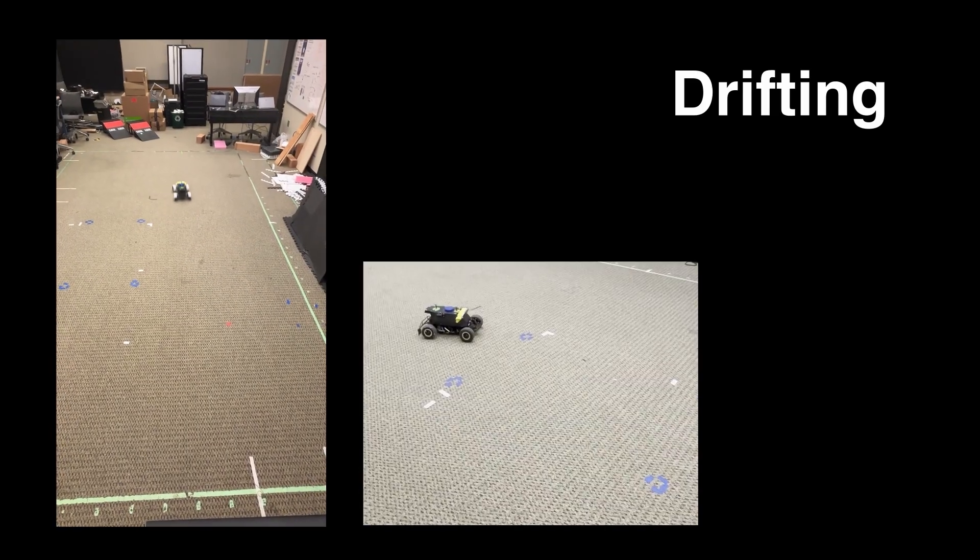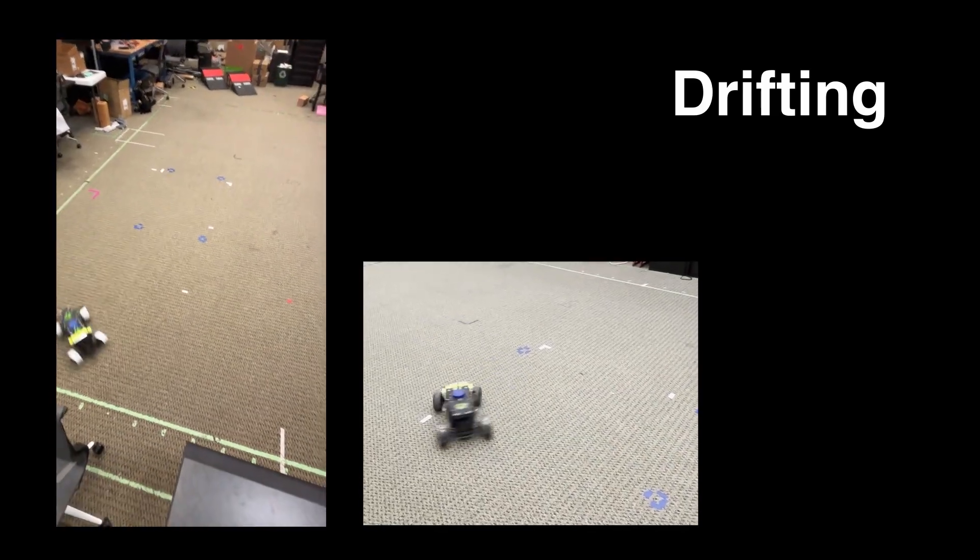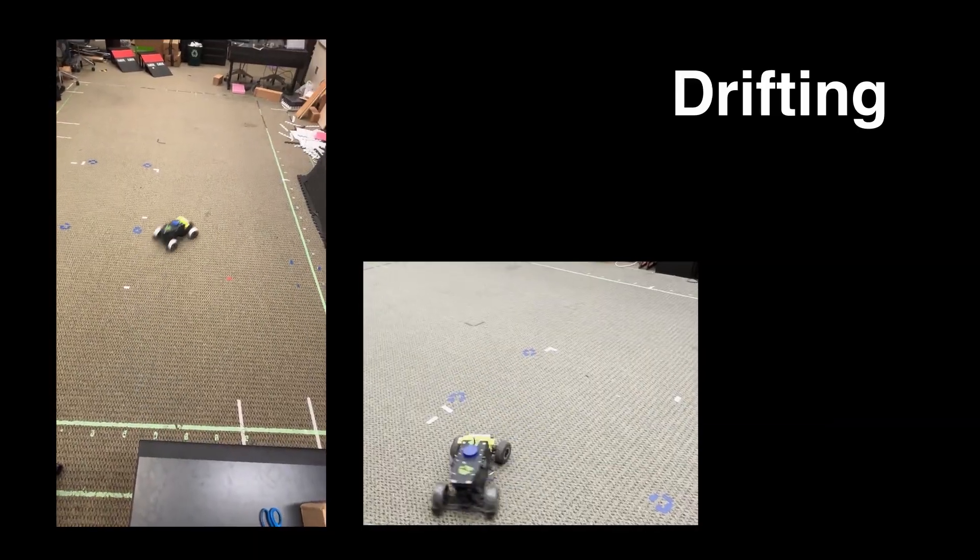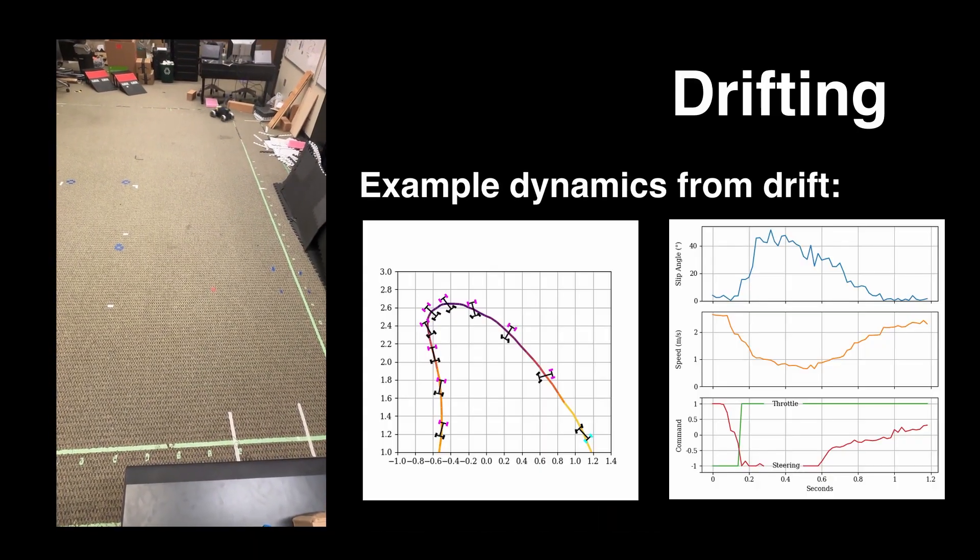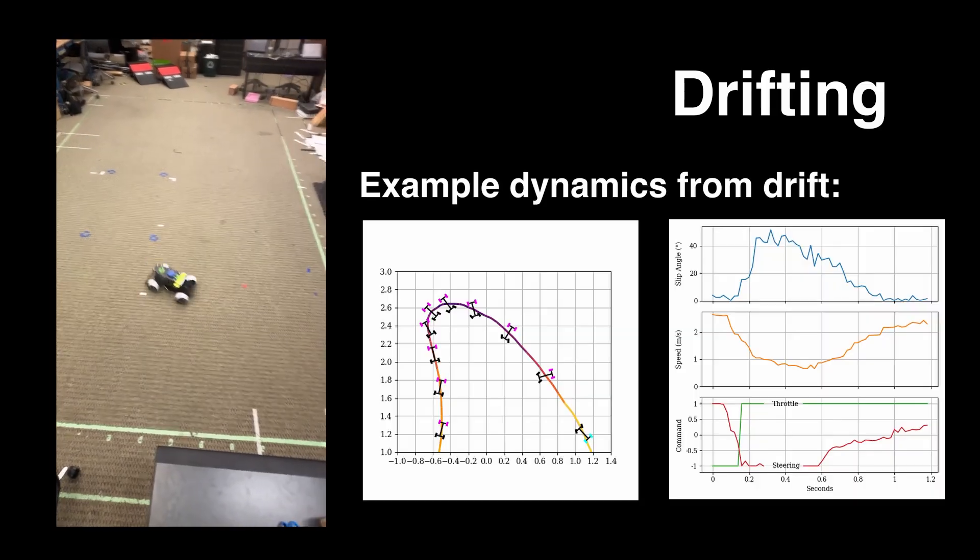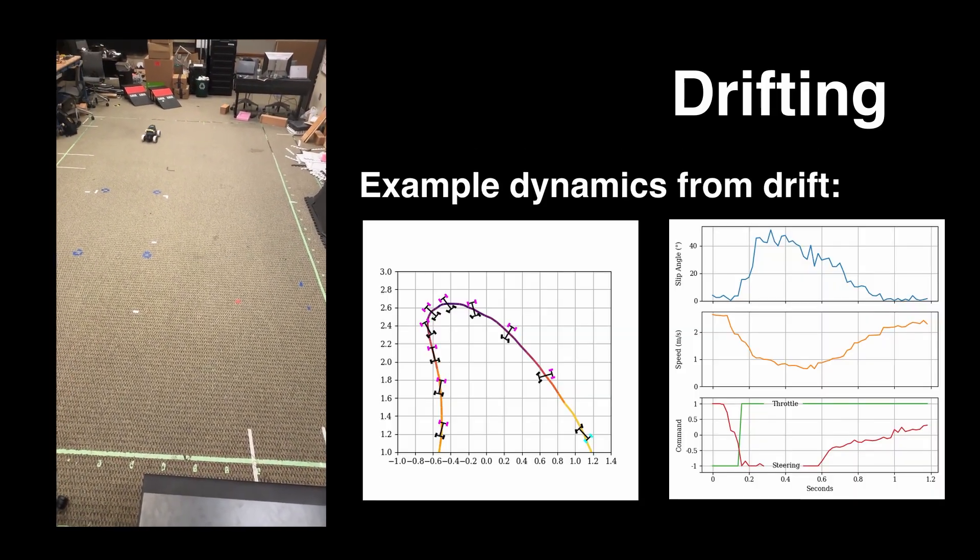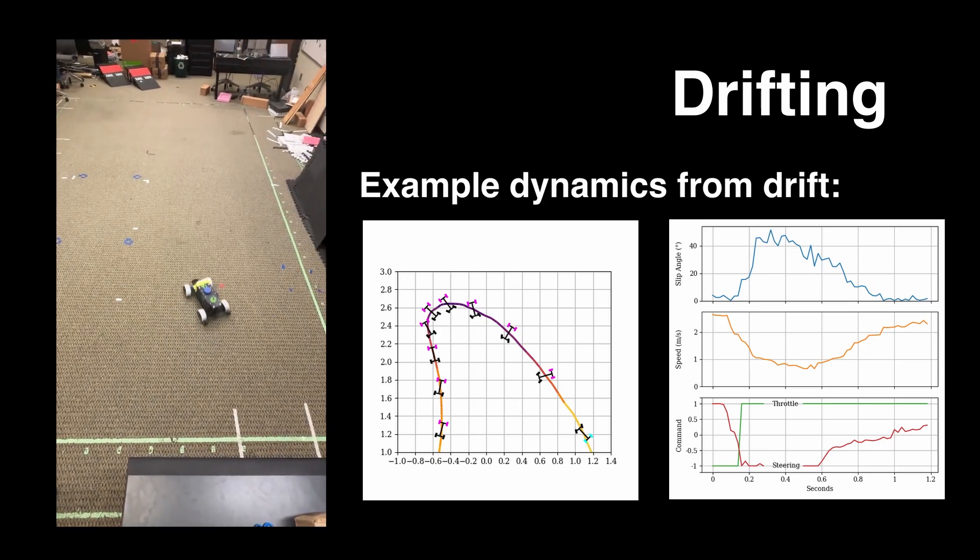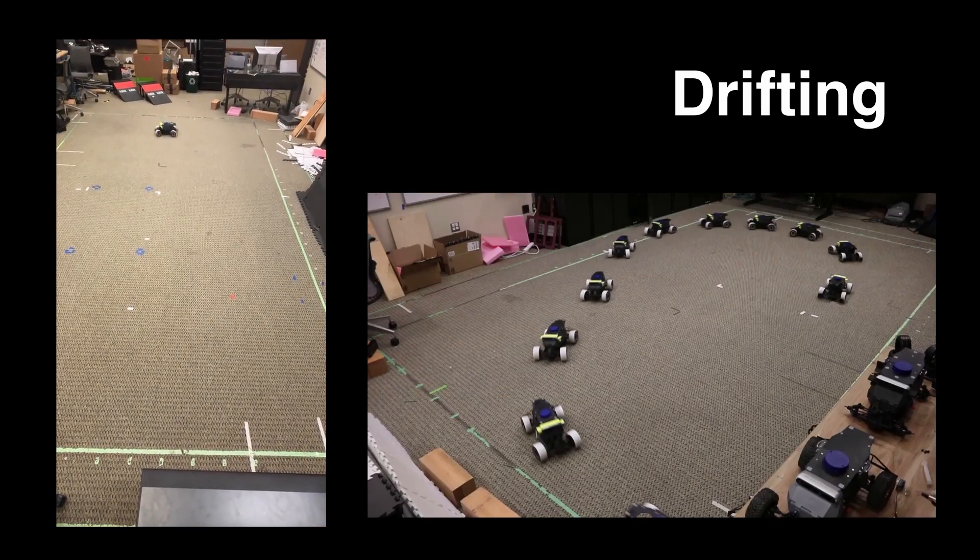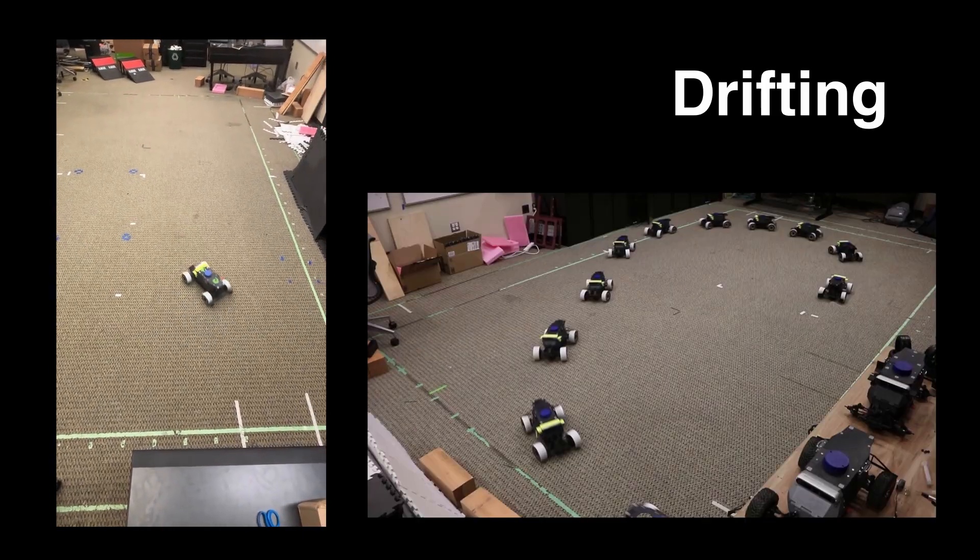Drifting is all about dynamics and control. Here, the robot has to handle things like tire friction, slip, and high-speed turns. When it's sliding through a turn, the wheels aren't pointing the same direction the robot is actually moving. And so there's tire friction, slip, and just a whole lot of forces pulling it around. The controller has to juggle steering, throttle, and balance all at once.